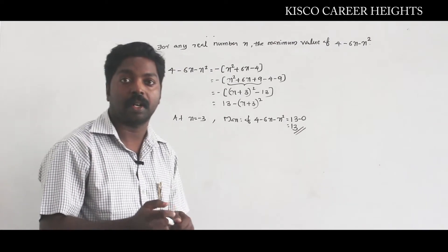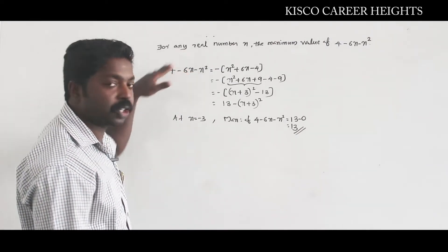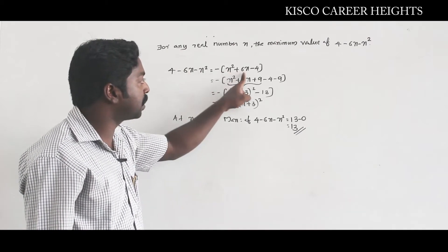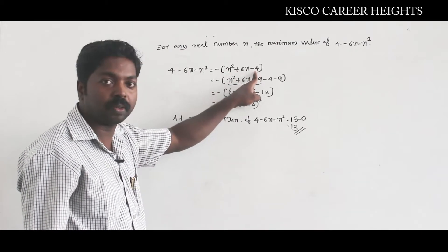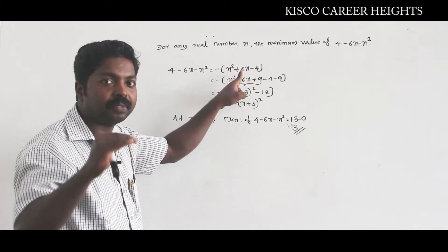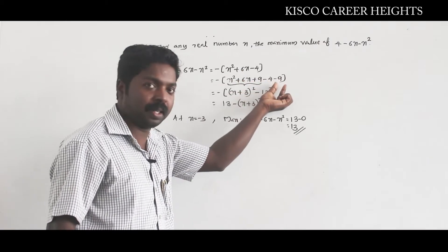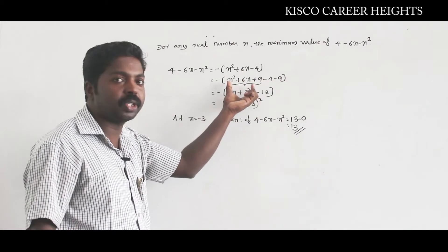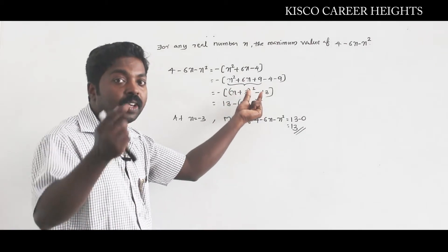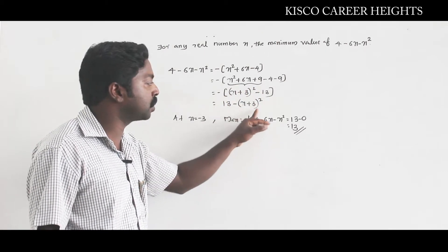That is the method of completing the squares. Once again, take the quadratic expression. The coefficient of x² is -1, so we have -(x² + 6x - 4). For the coefficient of x, which is 6, take its half — 3 — then square it — 9. Adding and subtracting 9, the first three terms constitute a perfect square: -(x + 3)² minus 13. Operating with the minus sign, it turns to 13 - (x + 3)².